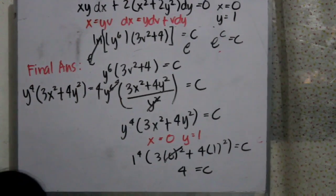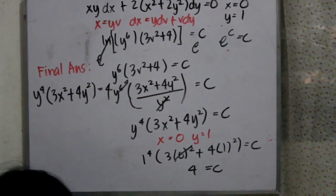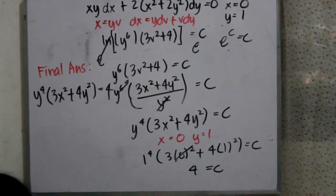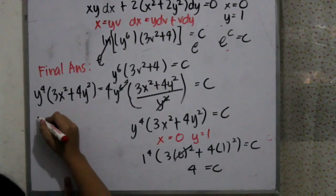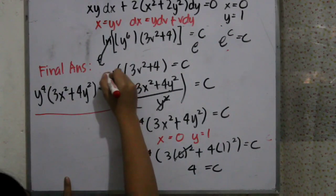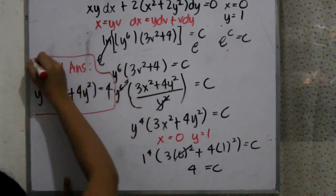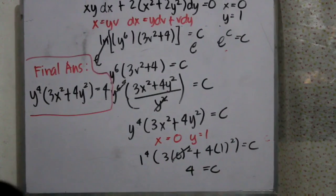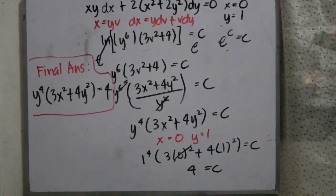Now we just substitute c equals 4 into our equation. Our final answer is y⁴·(3x² + 4y²) equals 4. We box it to show our final answer. That's the end of the video — thank you for watching.